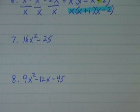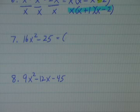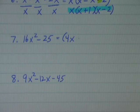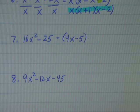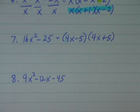Number 7: 16x squared minus 25. Here I notice that this is the difference of squares. The square root of 16 is 4, the square root of x squared is x, and the square root of 25 is 5. So my difference of squares will factor as 4x minus 5 times 4x plus 5. So 16x squared minus 25 is completely factored as 4x minus 5 times 4x plus 5.